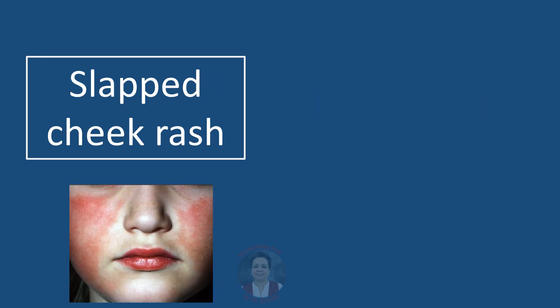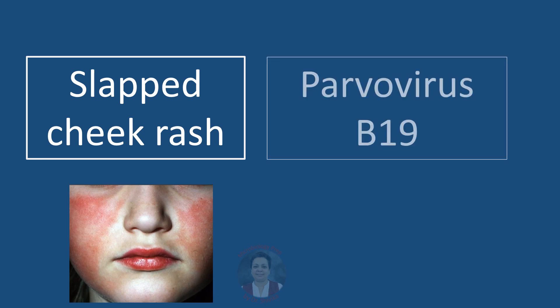A child presenting with erythema on both cheeks — that is called a slap cheek rash. The likely agent causing this is parvovirus B19, and the disease it causes is erythema infectiosum, also called the fifth disease.